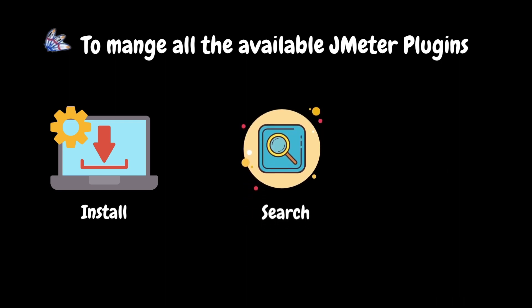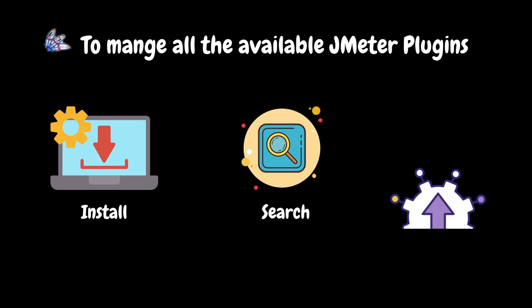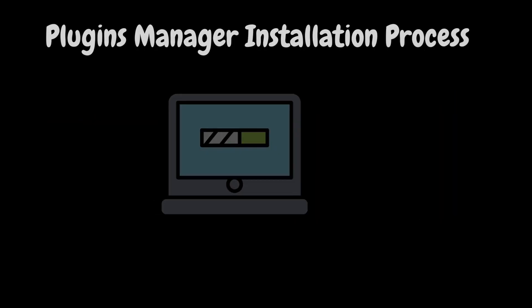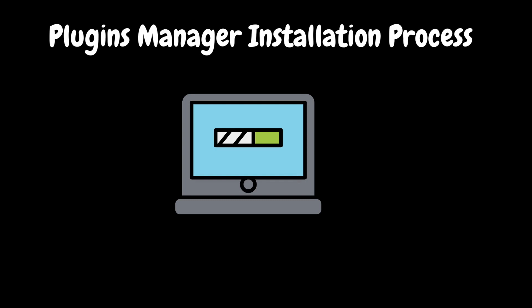It provides various features: we can install all the available plugins directly from the plugins manager user interface without going through the manual installation process. We can quickly browse through different plugins and understand the problem that each one solves. If there is a new version available for installed plugins, we can easily upgrade it from the plugins manager user interface. Now let's look at the plugins manager installation process. The installation process is pretty similar to a plugin — we just need to download the plugins manager jar from the official website and put it into JMeter's lib/ext directory, then restart JMeter.